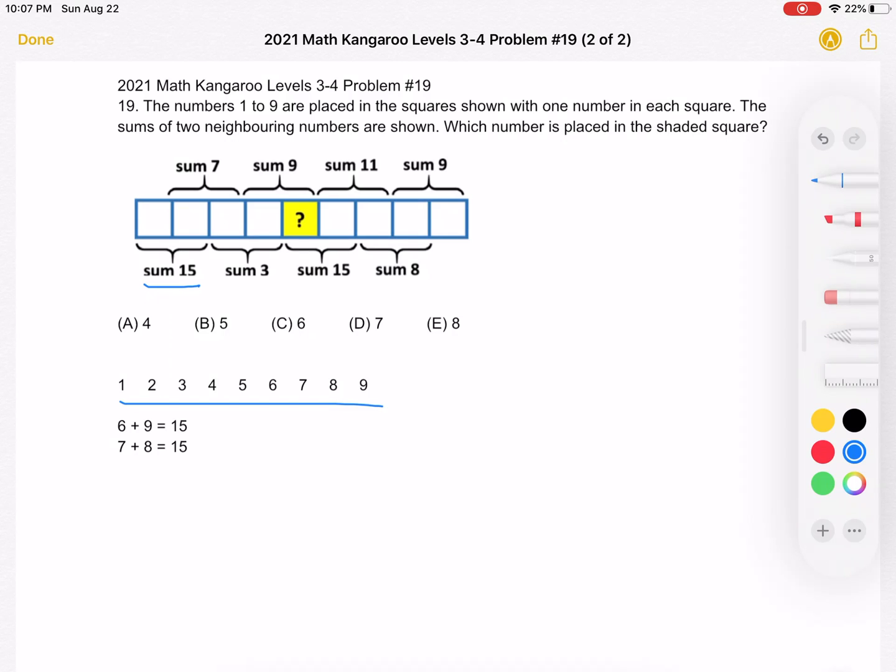But we have to see that we have a sum of 7. So whatever number we put in this square, it's part of the sum of 15 and it's part of the sum of 7. So out of our numbers 6, 9, 7, or 8, one of those four numbers is in that green square.